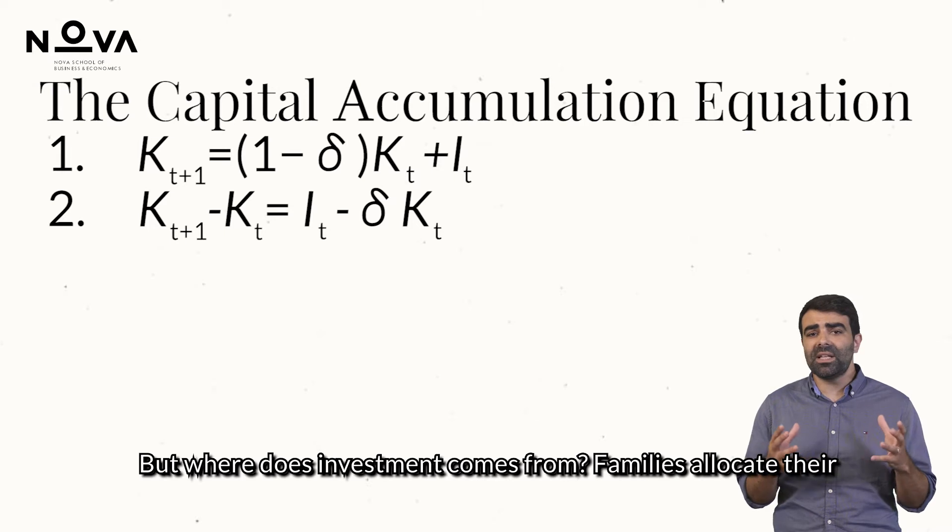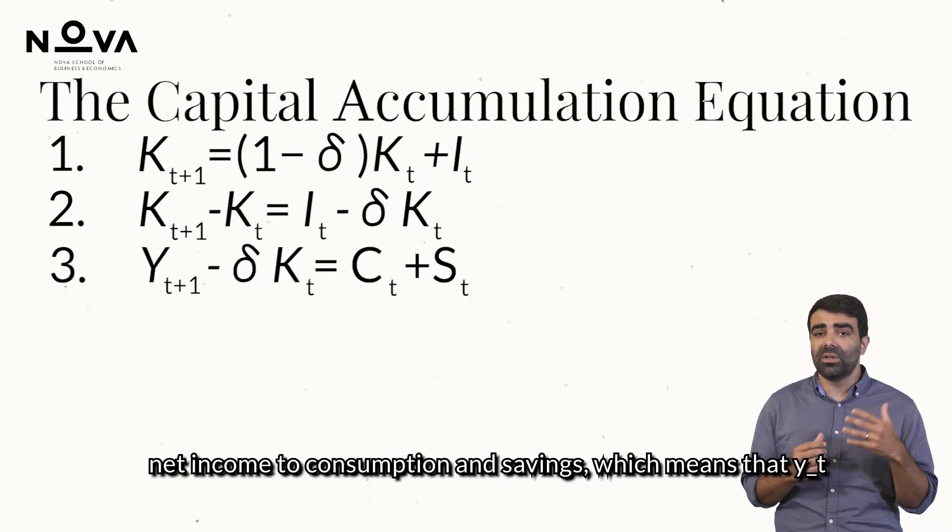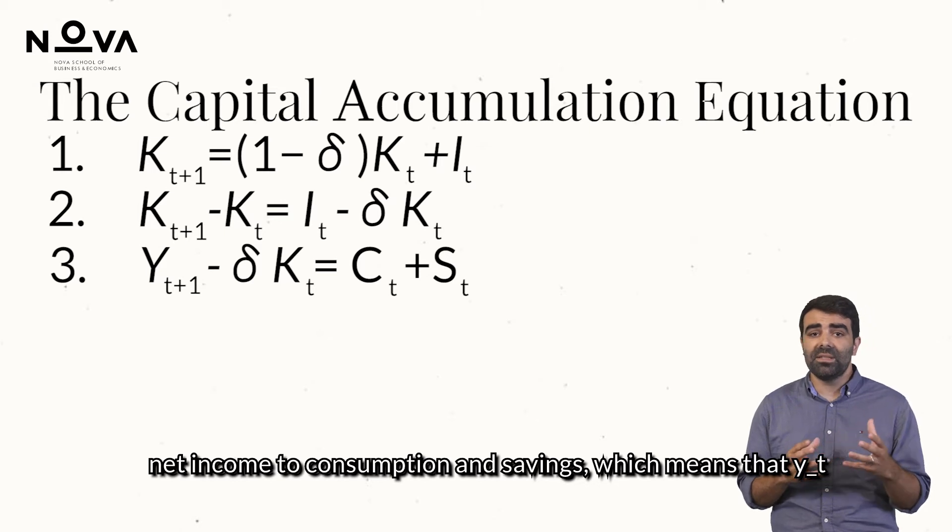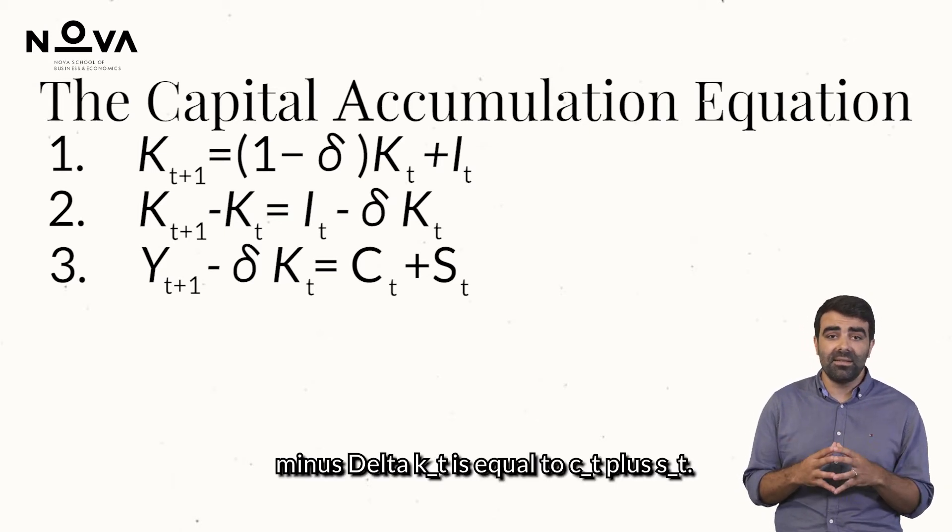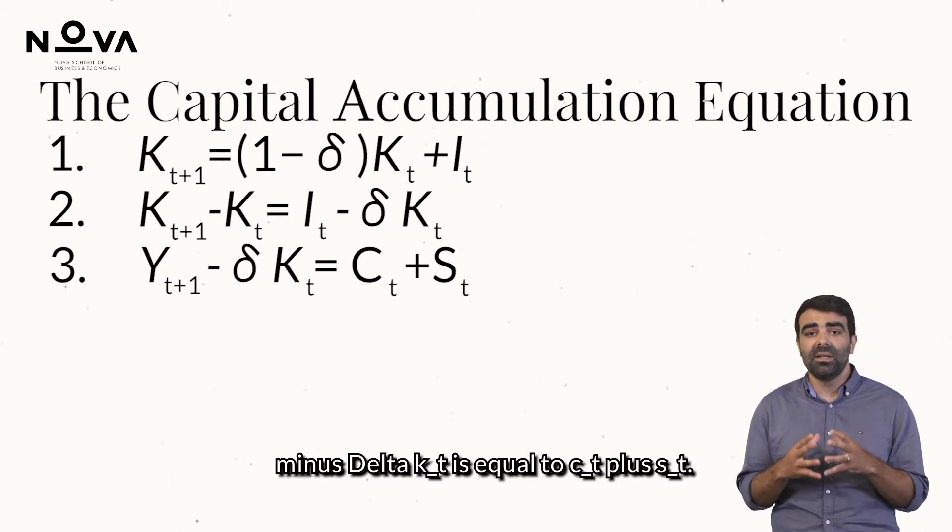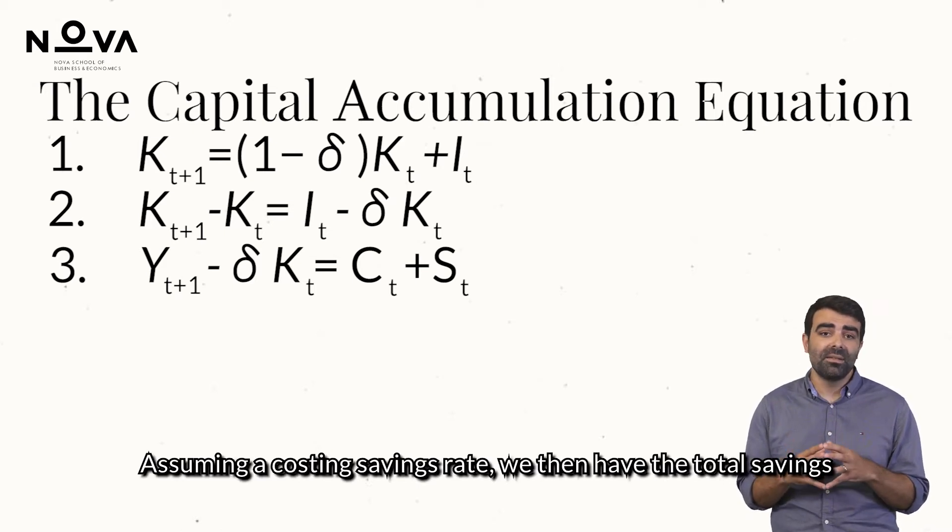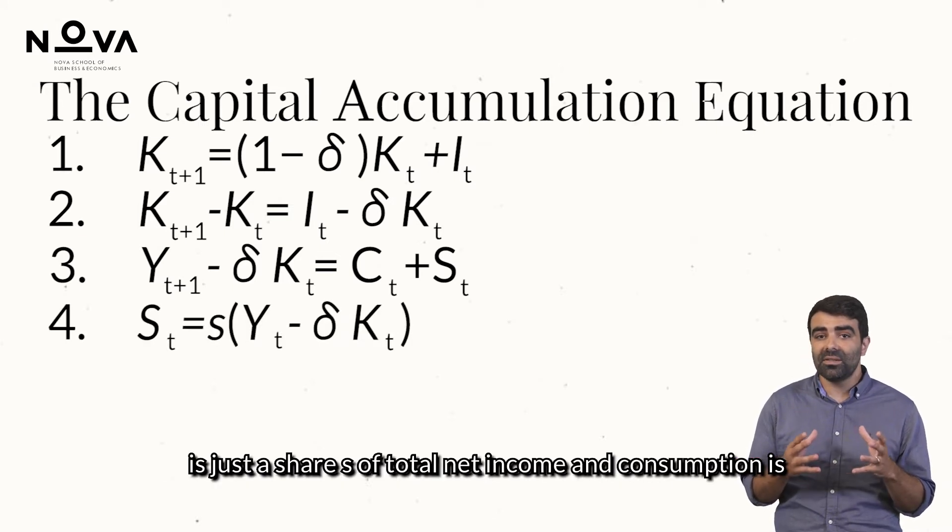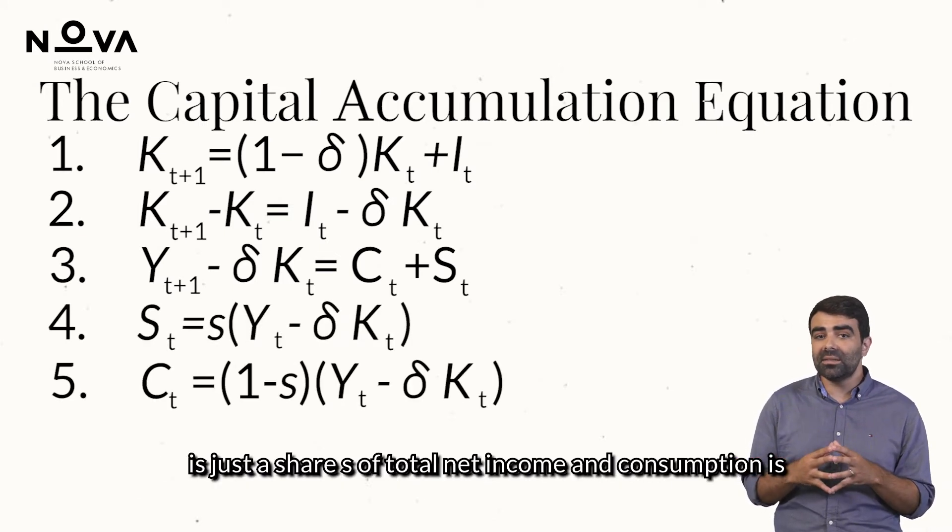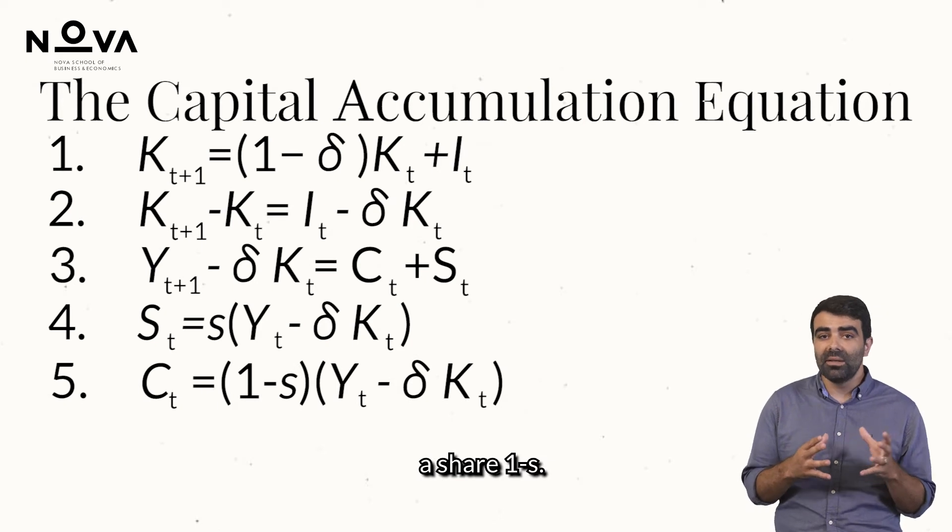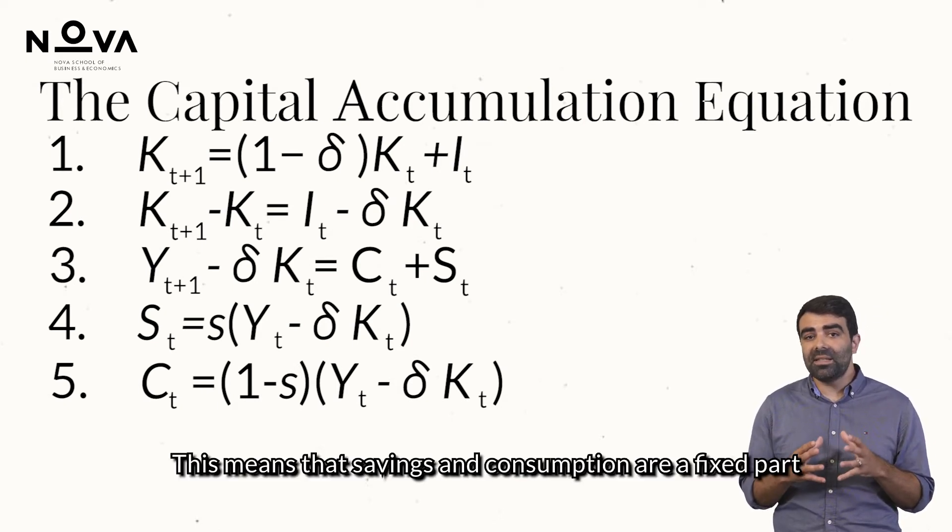But where does investment come from? Families allocate their net income to consumption and savings, which means that yt minus delta kt is equal to ct plus st. Assuming a constant savings rate, we then have that total savings is just a share s of total net income and consumption is a share 1 minus s. This means that savings and consumption are a fixed part of income.